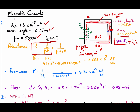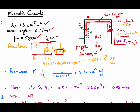Writing permeability as μ₀μᵣ and plugging in the values — length 0.25 m, permeability of air, relative permeability, and cross-sectional area — the reluctance of this flux path is 2.652×10³ ampere-turns per weber. The unit comes from the magnetic Ohm's law: reluctance = MMF/flux, and MMF has units of ampere-turns to distinguish it from current.